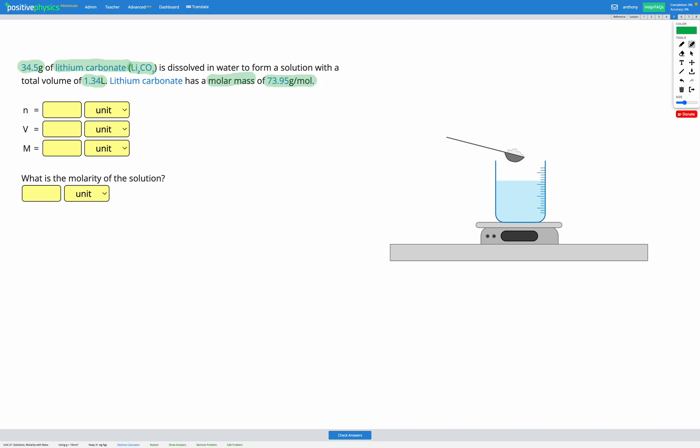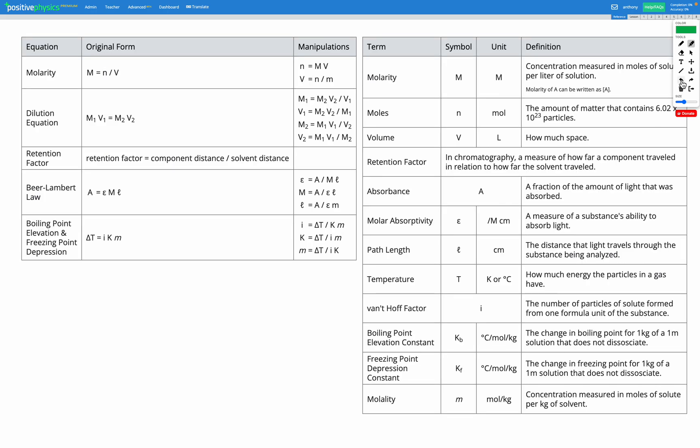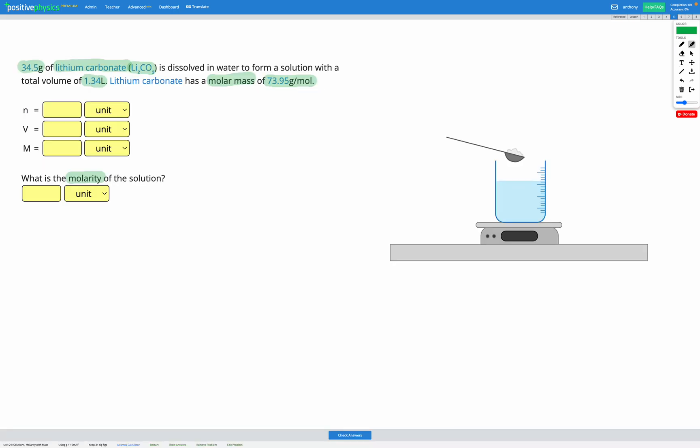Okay, so we're trying to find the molarity of the solution, so let's head over to our reference sheet to remind ourselves of the molarity equation. Here it is at the top: molarity equals the number of moles divided by the volume. So we've got M equals n over V.